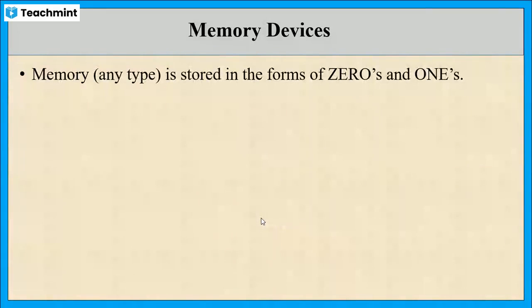If we are seeing the working of memory devices, any type of memory is stored in the form of zeros and ones, that is in binary digits. It does not matter if we are storing your favorite movie or a PDF file of your resume. It is always broken down into zeros and ones in the memory.